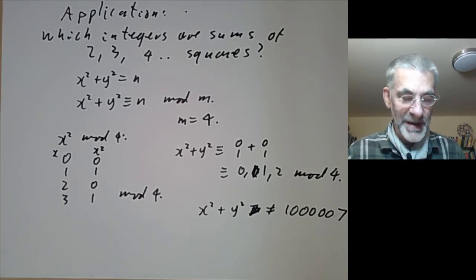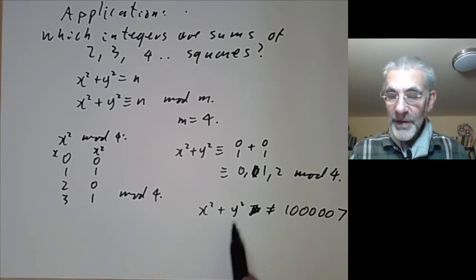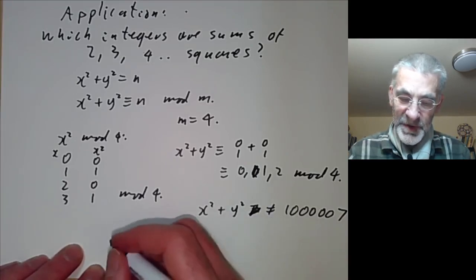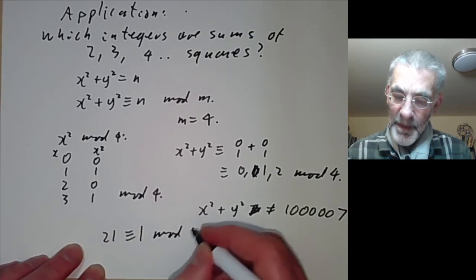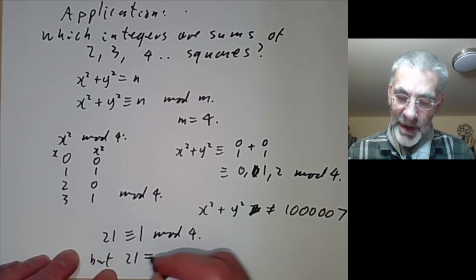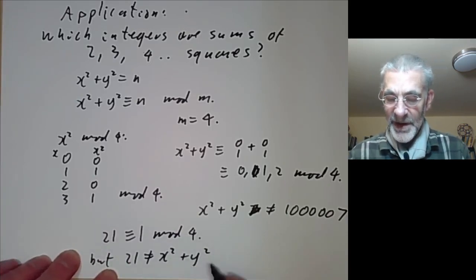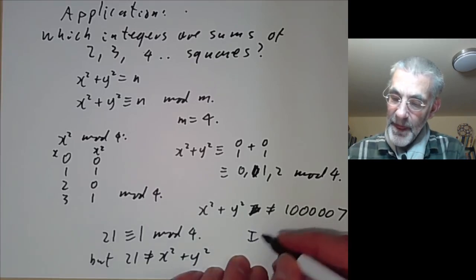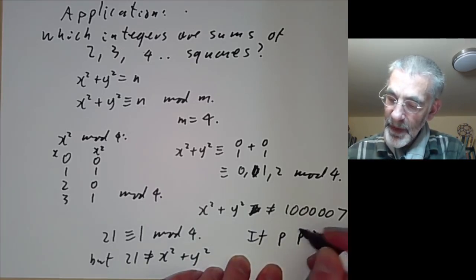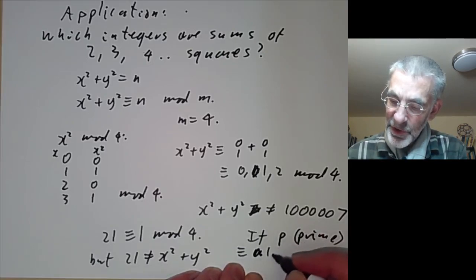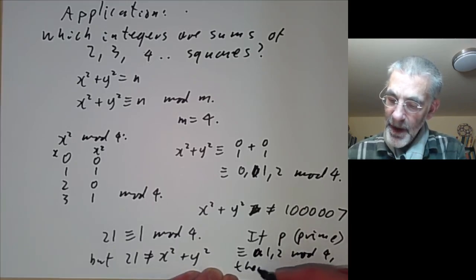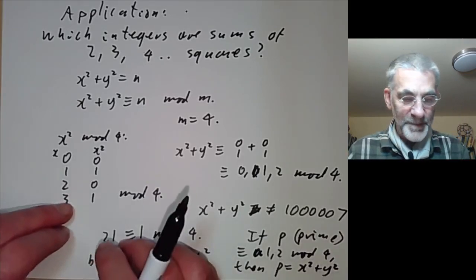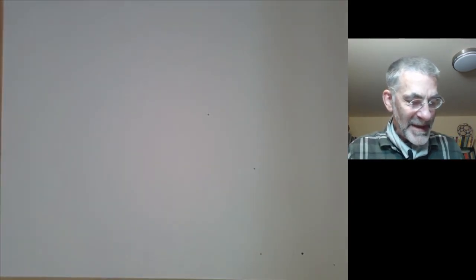The converse isn't true: there are plenty of numbers not congruent to 3 modulo 4 that are still not a sum of two squares. For example, 21 is congruent to 1 mod 4 but 21 is not equal to x squared plus y squared for any integers x and y. So this is a necessary condition but not a sufficient one. We will see later that if a prime p is congruent to 1 or 2 mod 4, then p can be written as a sum of two squares — this is a very famous and fundamental theorem proved by Fermat.